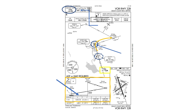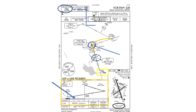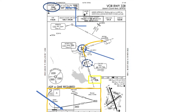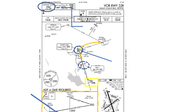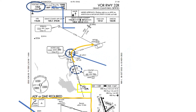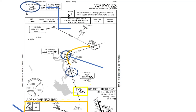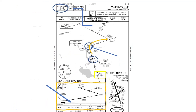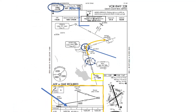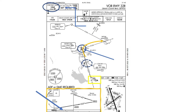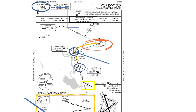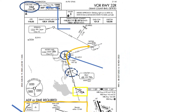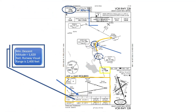Notice the missed approach procedure highlighted by the orange arrow in the chart. To execute the missed approach, the pilot would need to make a climbing right turn to 4,000 feet to intercept the 054 radial of the Moses Lake VOR and intercept the holding pattern at Batum, which is 9.8 miles from the Moses Lake VOR.